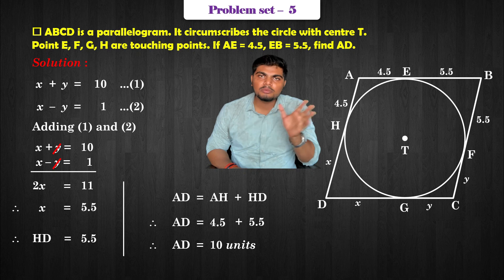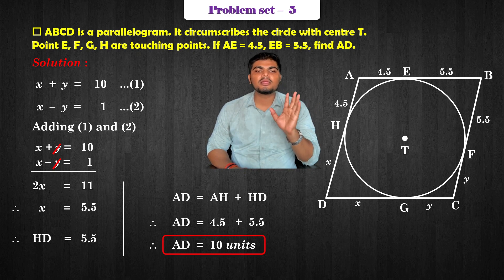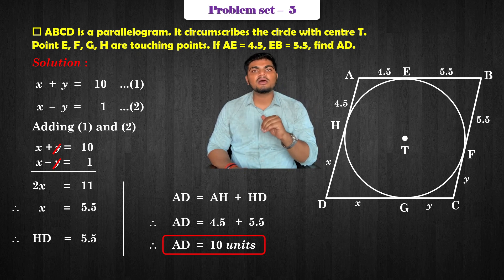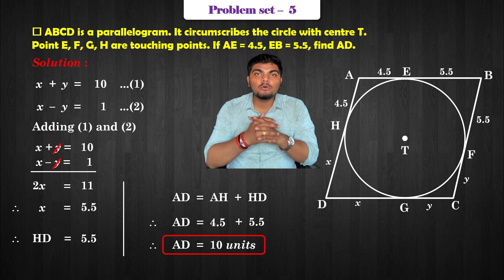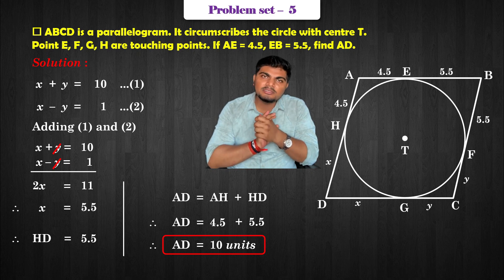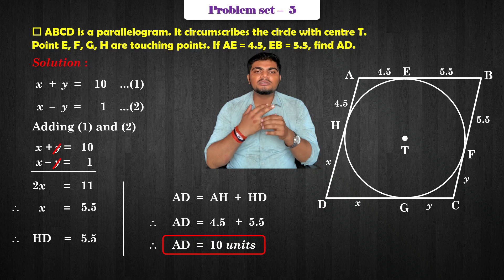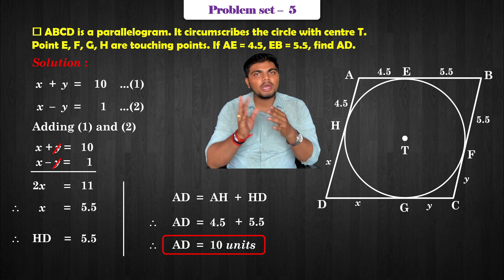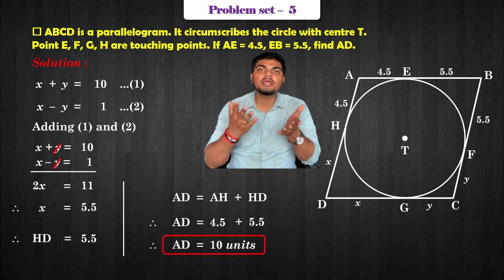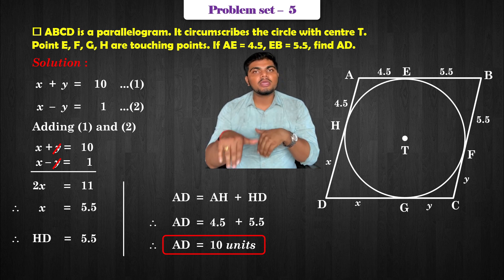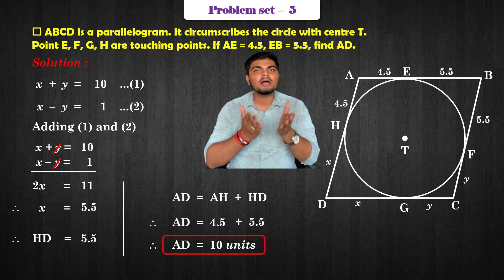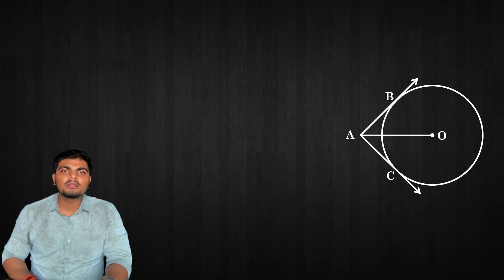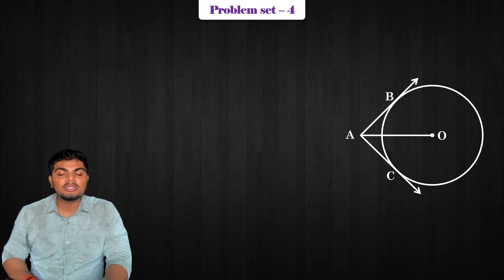The answer is AD equals 10 units. Since no units like meters or centimeters are given in the question, I am using units. Similarly, if asked to calculate DC, you can find y by substituting x equals 5.5 into equation 1 or 2, then use y to calculate DC.